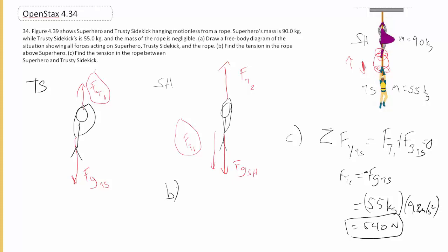Now let's go back and find part B. Part B is a little harder. We need to find the tension in the rope above the superhero. That's the tension up here, or that's this one right here, what we call FT2. Let's write down the Newton's second law for the superhero. So we need the sum of the forces in Y for the superhero.